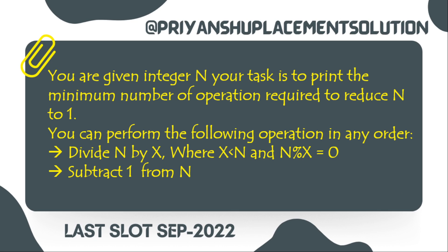The first question: you are given an integer N and your task is to print the minimum number of operations required to reduce N to one. You have two choices. The first operation is: divide N by X, where X is any number less than N.